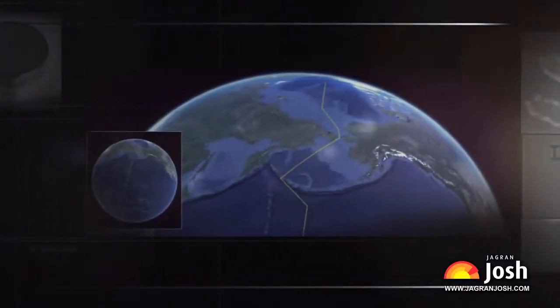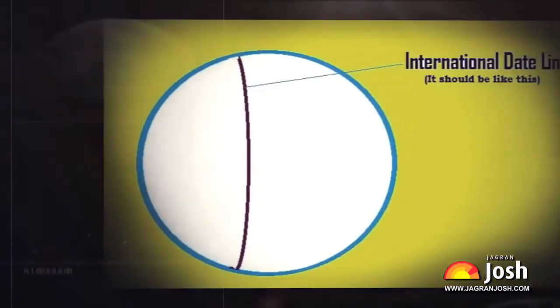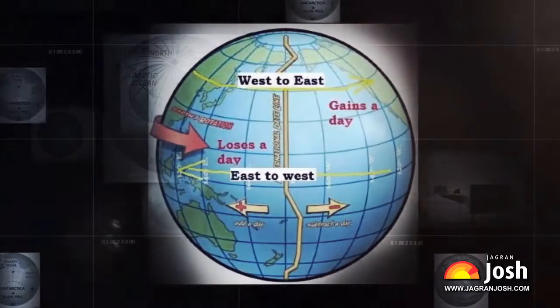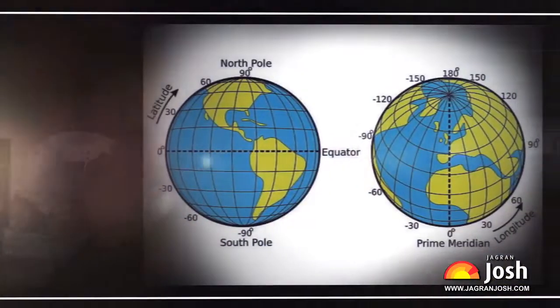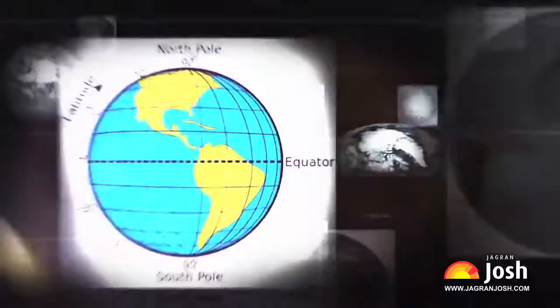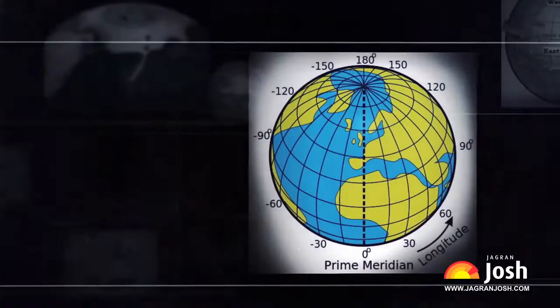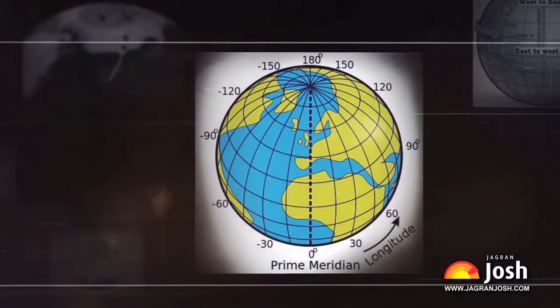Had the international date line been a straight line, it would have demarcated the same landmass into two parts, and then both places would have different dates on the same day. Clearly, it would have been very inconvenient if one part of a country had one date while another part had a different date. This is why the line follows a zig-zag path to avoid splitting any single landmass.